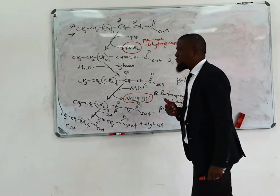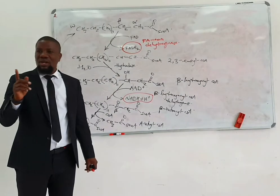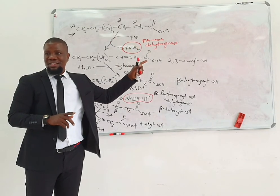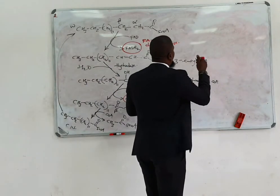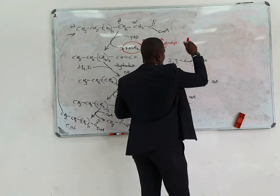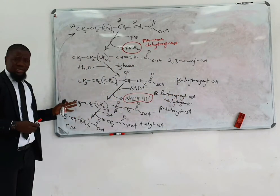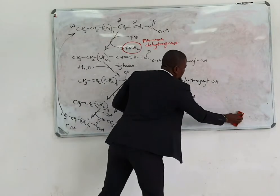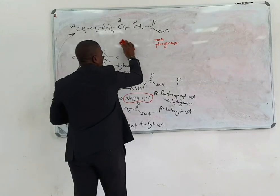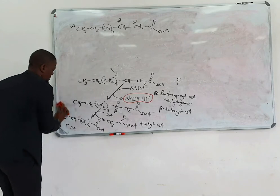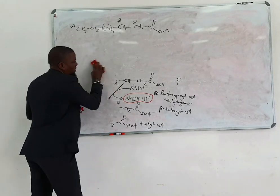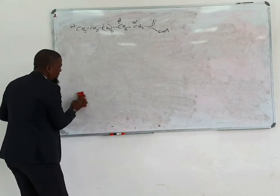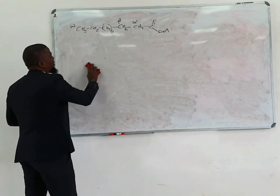When you have a fatty acid with 16 carbons, people really struggle to see how this fatty acid is going to be broken down in seven cycles — not eight cycles. Here is what is happening. I'll show you the whole length of the fatty acid so we can work out how the numbers are actually going to happen, and then we bring up an equation for that.